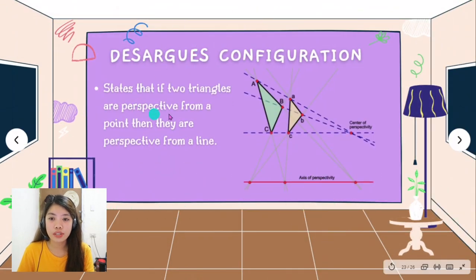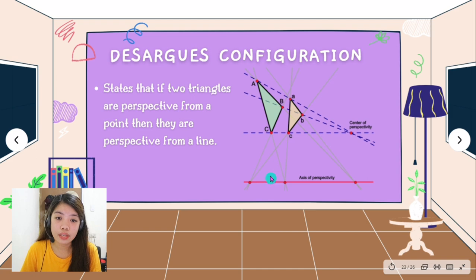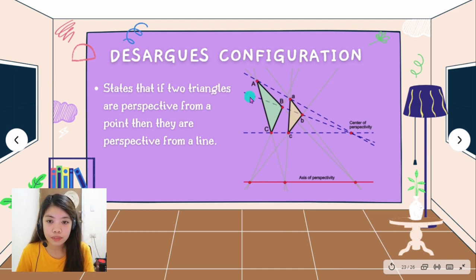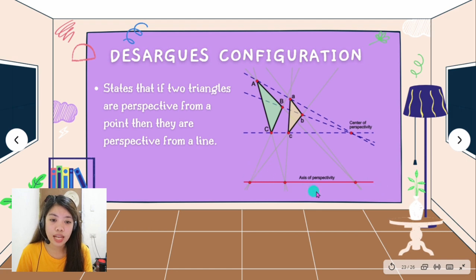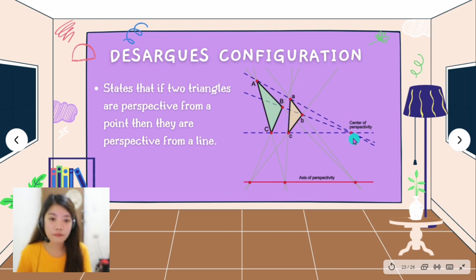The Desargues configuration states that if two triangles are perspective from a point, then they are perspective from a line. As shown in the illustration, the first triangle is uppercase A, B, and C, and the second triangle is lowercase a, b, and c. The intersection of their corresponding lines forms the center of perspectivity. When you connect the intersections of the corresponding sides, you create a line called the axis of perspectivity. This proves that if two triangles are perspective from a point, then they are perspective from a line.